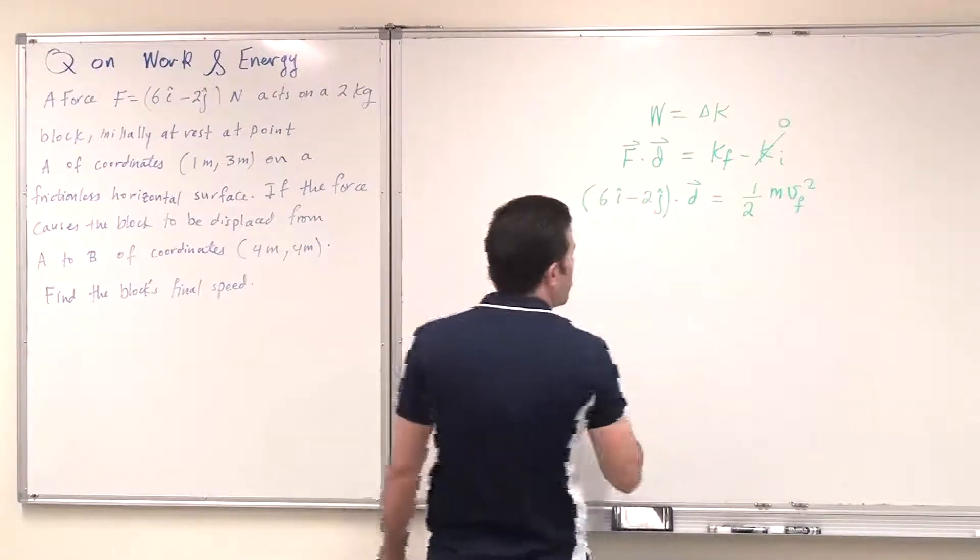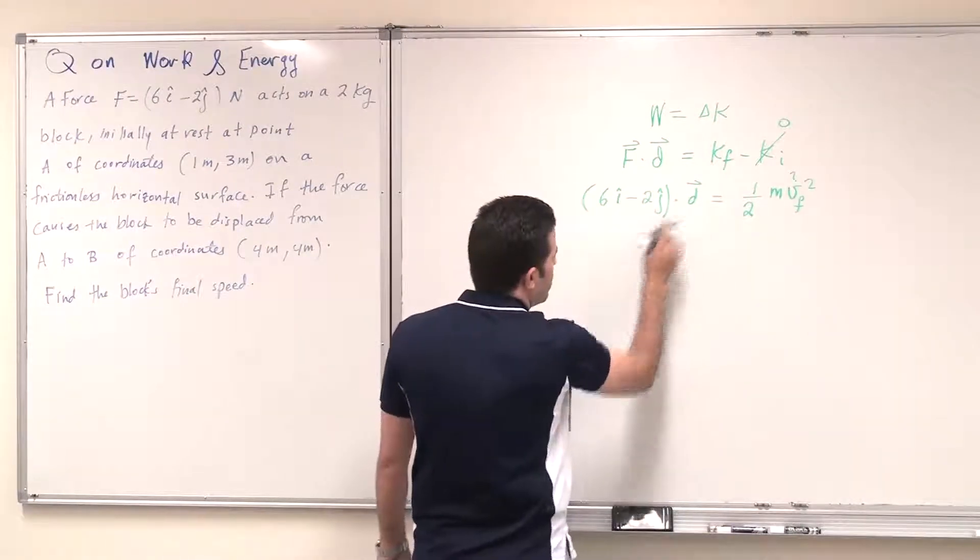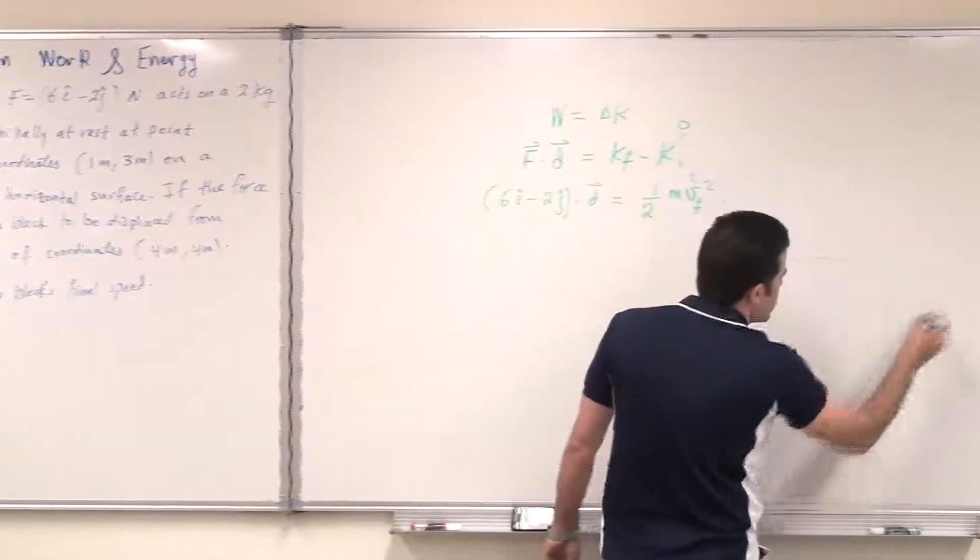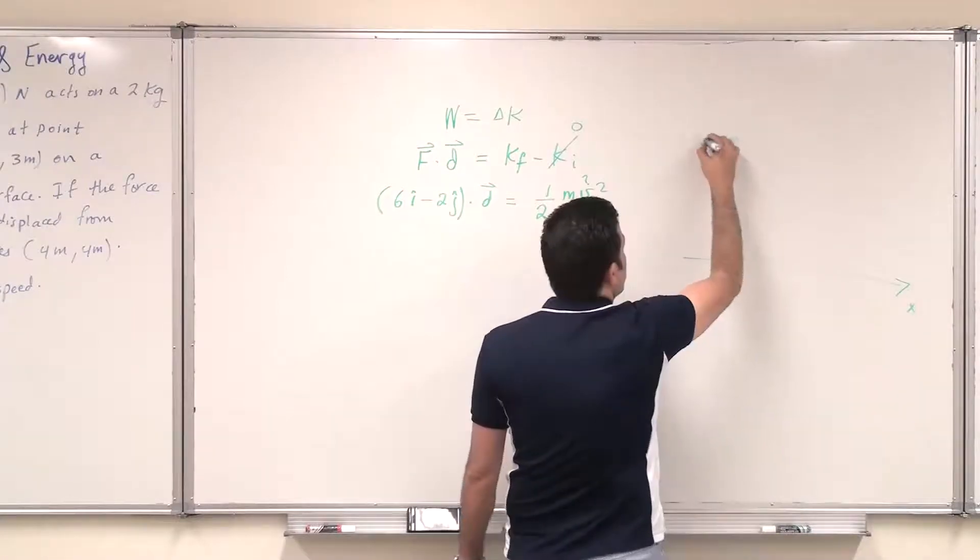So remember, I want to find this unknown, which is the V final, but I can find D. If I make a simple drawing of the coordinates, x, y coordinates, then I have x and y, this is in meters.